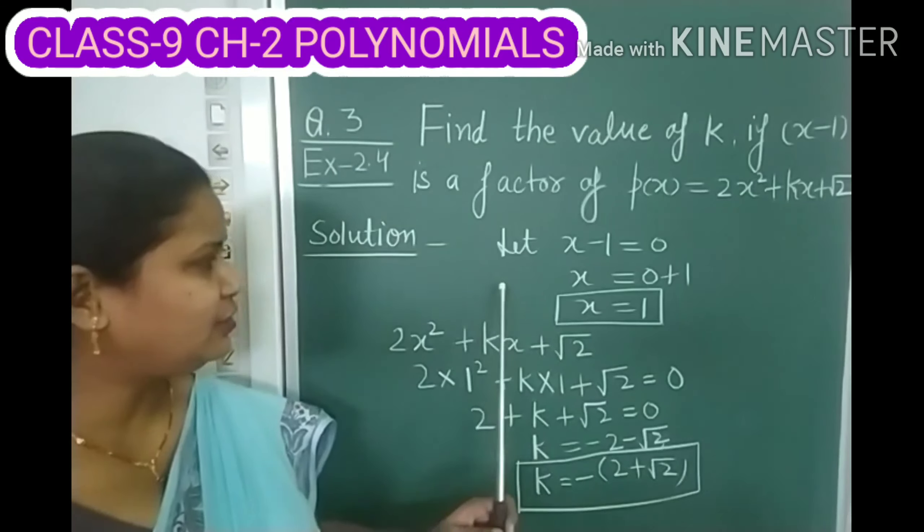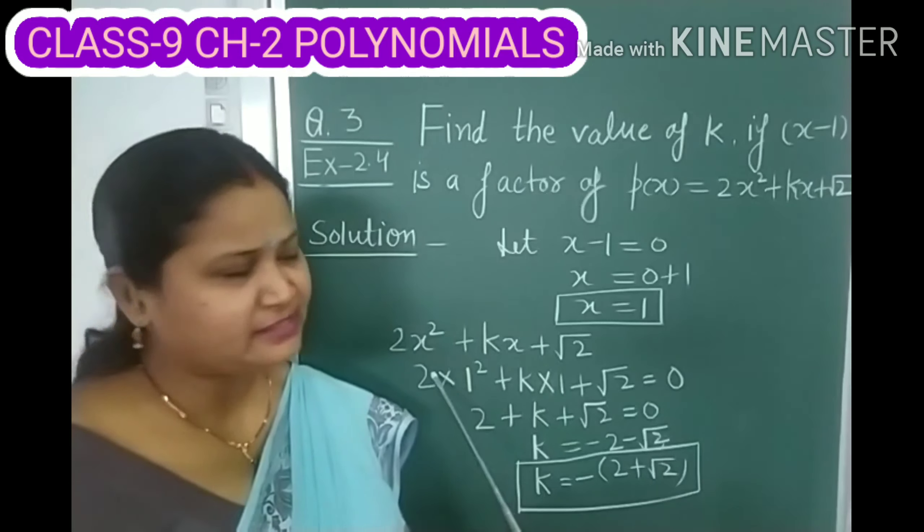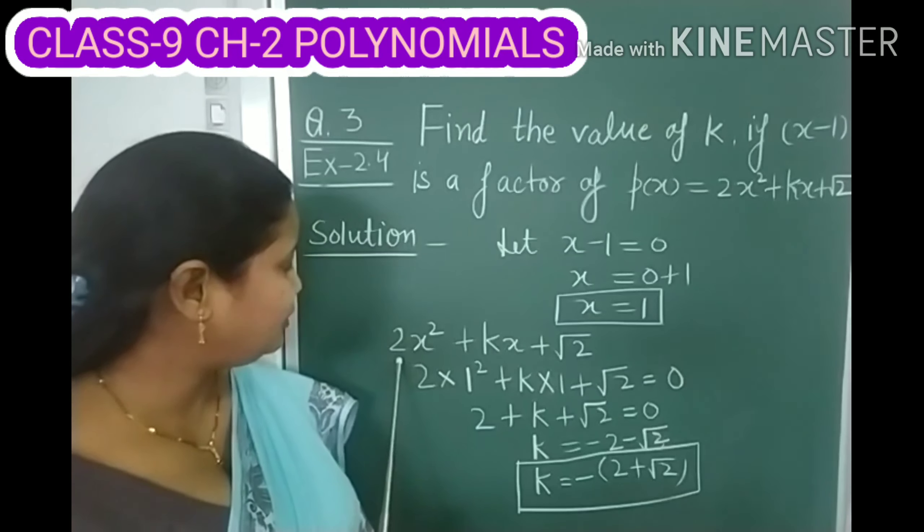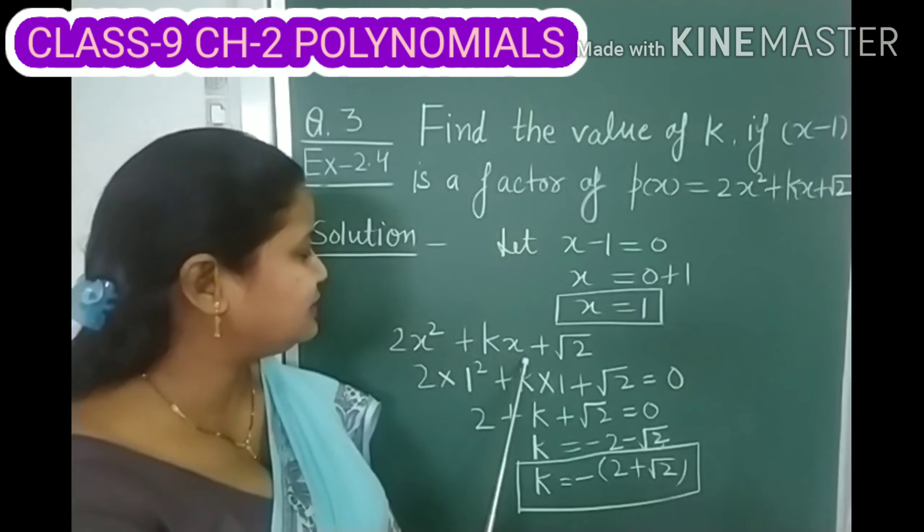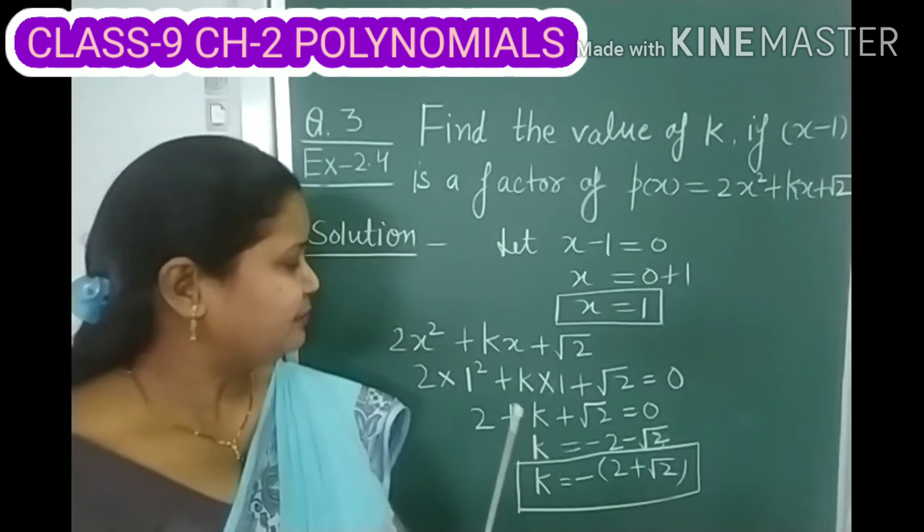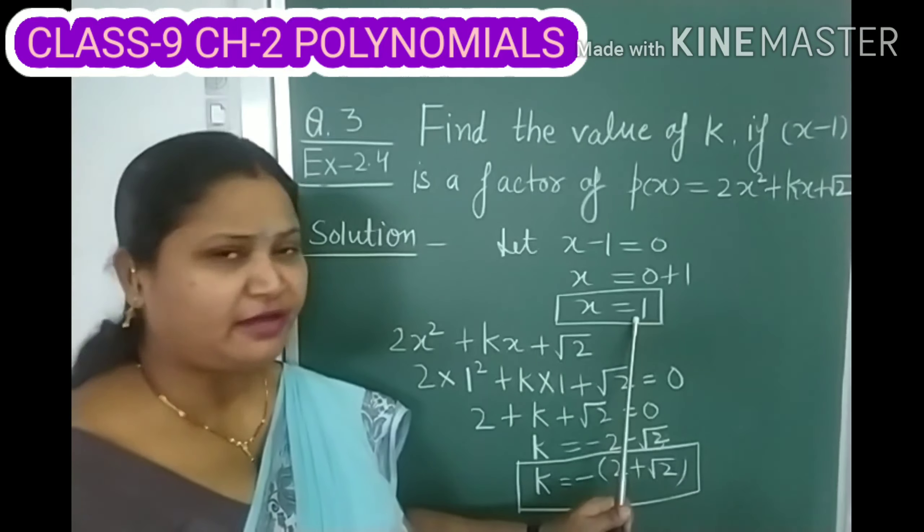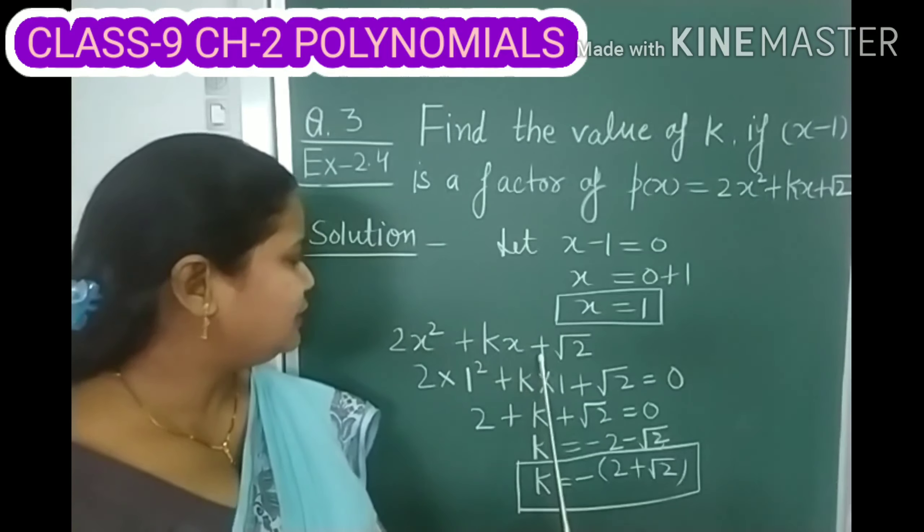Now, children, what we will do? Now we will move to the next step. In next step, we are given this quadratic polynomial 2X square plus KX plus root 2. Then we will substitute the value of X which we have found here in this polynomial.